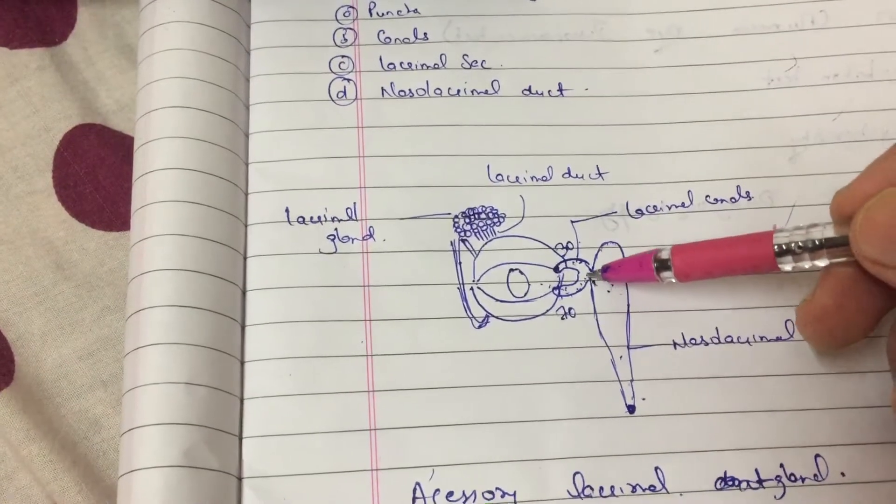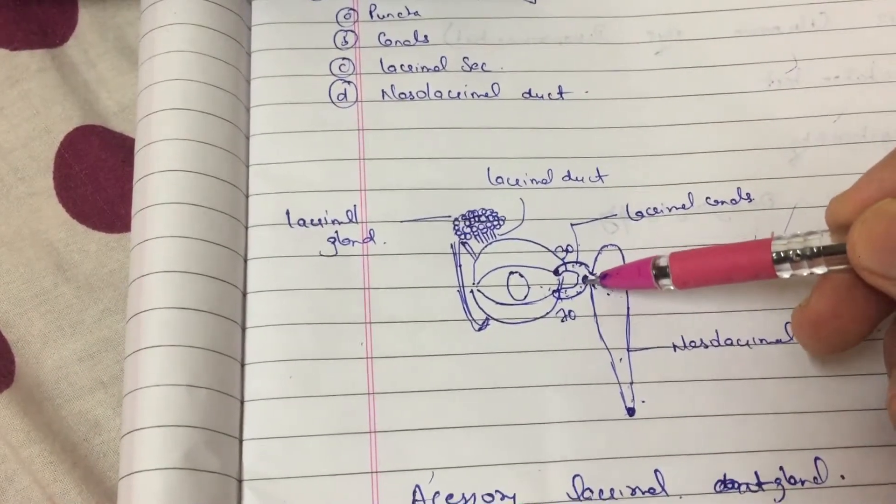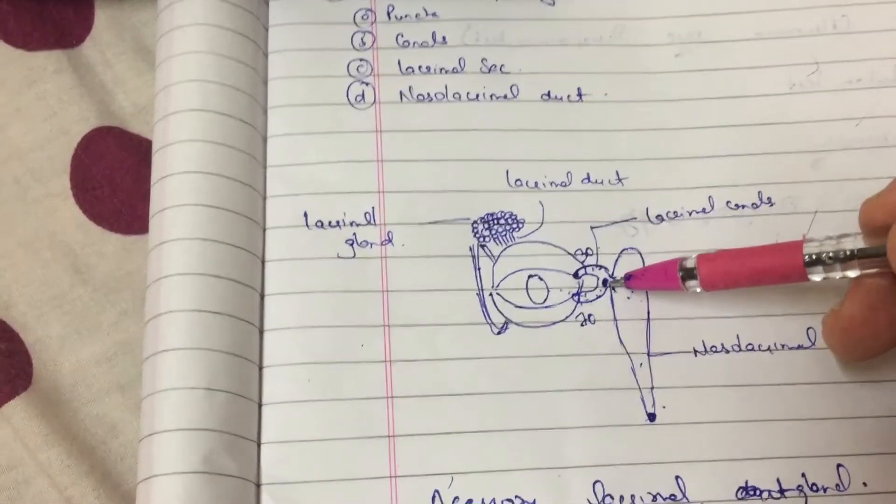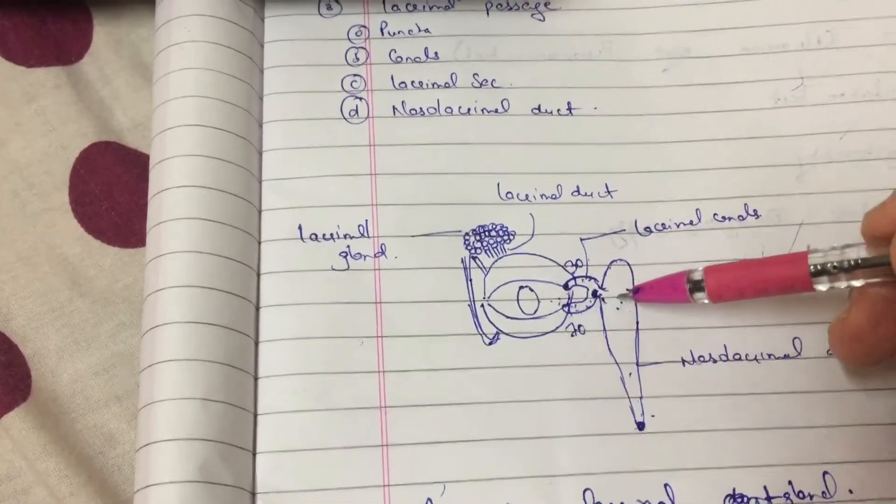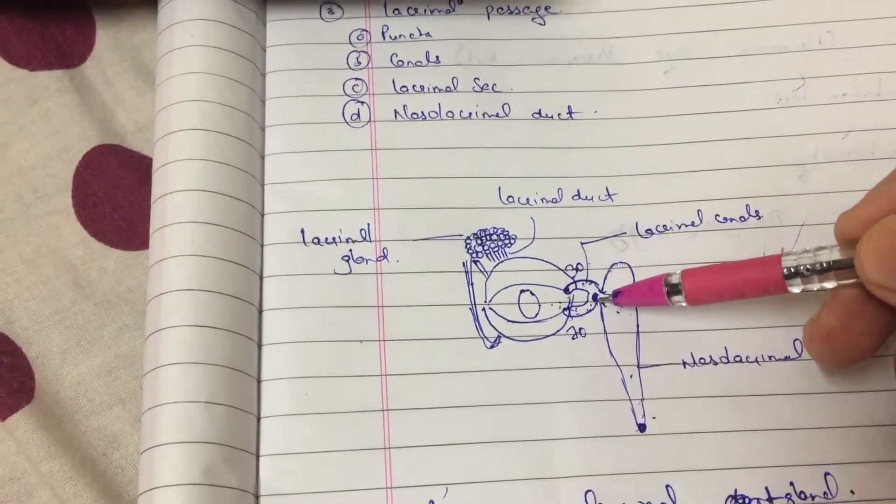In common canal, there is a valve which is called valve of Rosenmiller. This valve of Rosenmiller prevents the regurgitation of the tear back into the eye. And thus, this valve is very much important.